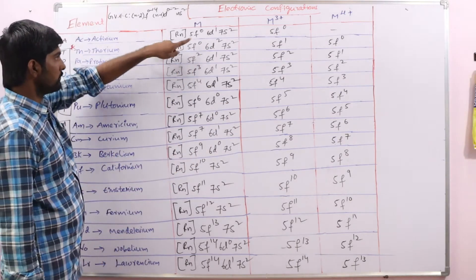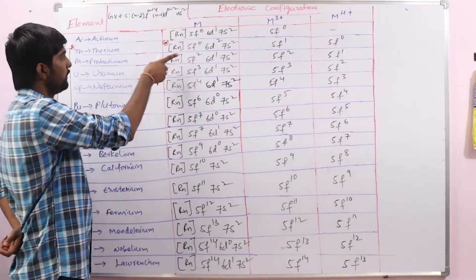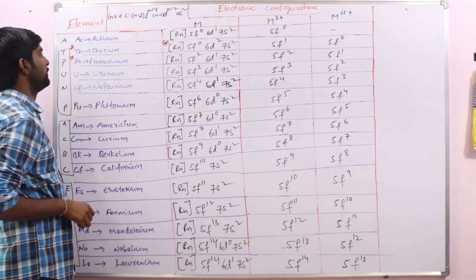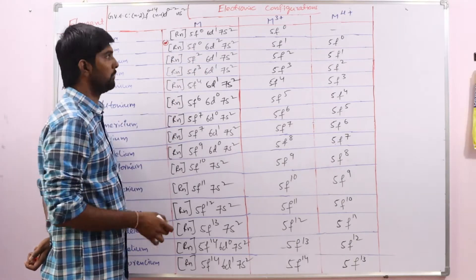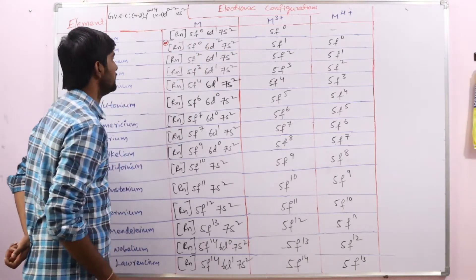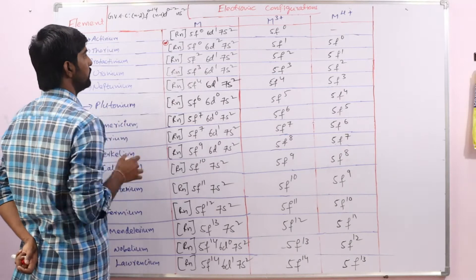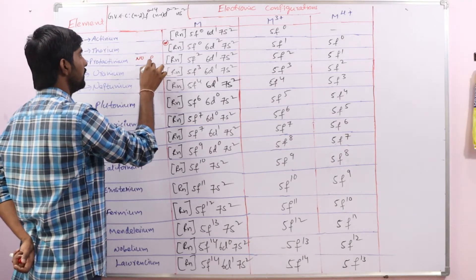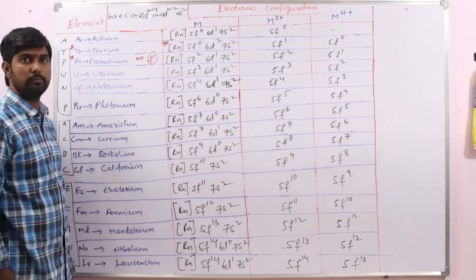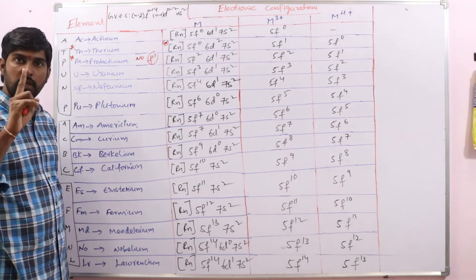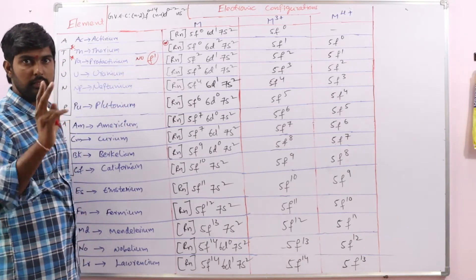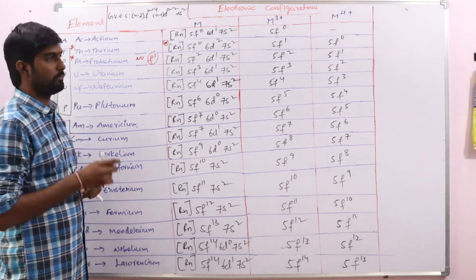Next, the electron should go to the F orbital — we expect 5F1 — but again there is an exception here. In the case of protactinium also, we should get 5F1, but instead we are getting 5F2, because one of the electrons from D jumps to F. So no F1 configuration is observed in the neutral atoms in actinoids. In lanthanoids, no F2; in actinoids, no F1. This is the difference between lanthanoids and actinoids.